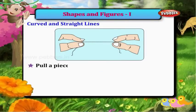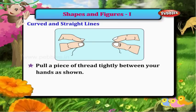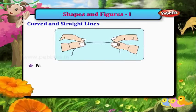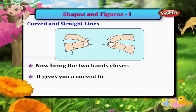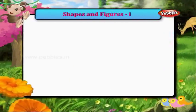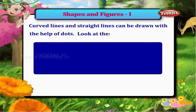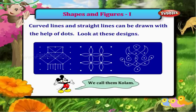Pull a piece of thread tightly between your hands as shown — it gives you a straight line. Now bring the two hands closer — it gives you a curved line. Curved lines and straight lines can be drawn with the help of dots. Look at these designs; we call them patterns.